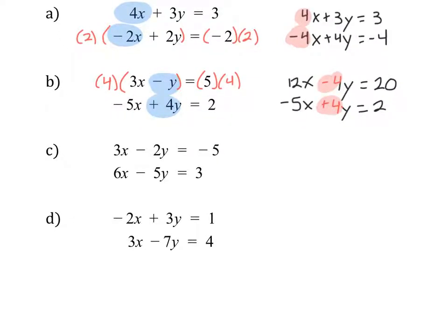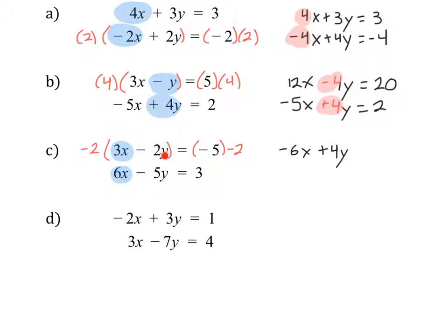Let's look at example 3. There's no easy way to turn a negative 2 into a positive 5, so I'll see if we can work with our x's. If this is a positive 6x, we want this to become a negative 6x, and there is an easy way to turn a 3 into a negative 6. So I'm going to multiply both sides of the equation by negative 2. That gives us negative 6x plus 4y — because negative 2 times negative 2y is positive 4y — equals positive 10. The second equation stays the same, and we have created opposite coefficients.